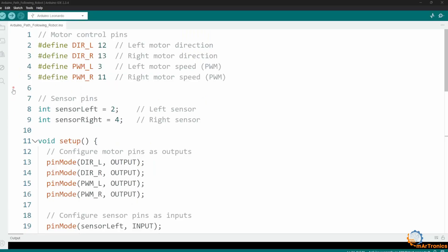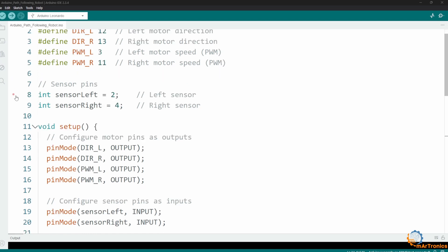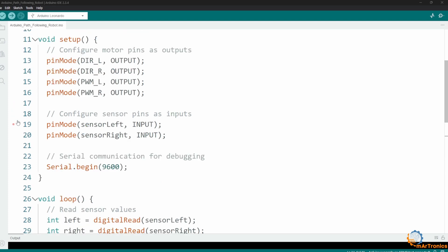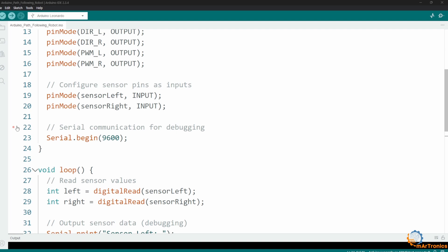The Arduino code is as follows. At first, I defined the pins for the motor. Pins 12 and 13 are used for the direction, while pins 3 and 11 are used for speed. Then, I defined the sensor pins. I also defined the motor pins to be all set as outputs, while the sensor pins are set as inputs. I then enabled serial communication to read the data coming from the sensor.